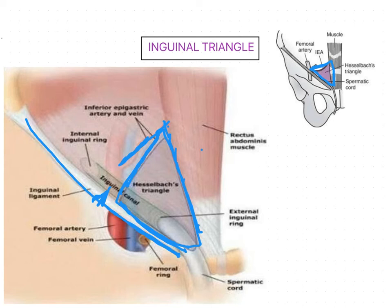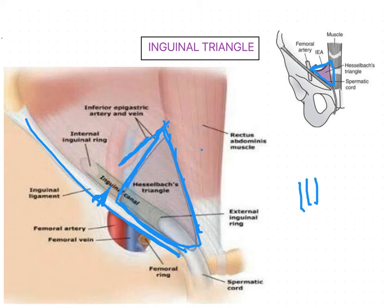The triangle also has a floor. The floor of the triangle is covered by parietal peritoneum — that is the last layer of the anterior abdominal wall when coming from the back side upward. The floor is covered by parietal peritoneum, then the extra-peritoneal tissue, and then the fascia transversalis. These are the structures that form the floor of the triangle.